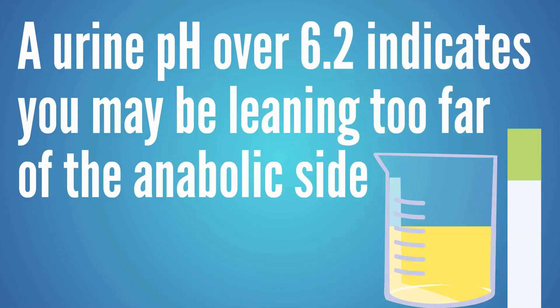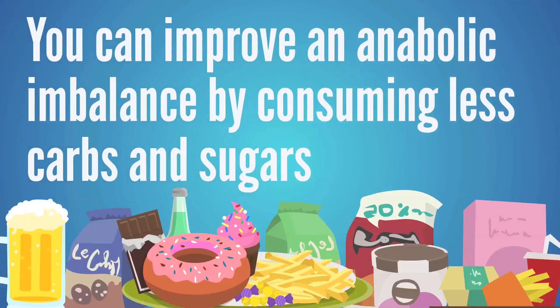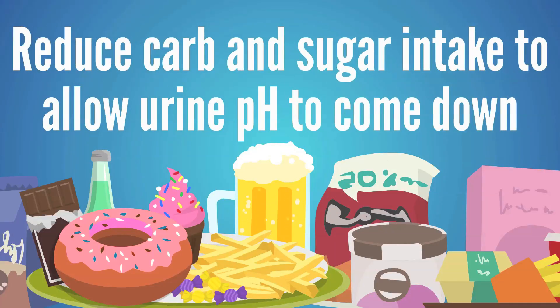One of the possible markers for an overly anabolic state is a high urine pH. So if you test your urine pH and it's over 6.2, that can be a possible indication that you may be leaning too far on that anabolic side. Consuming too many carbs and sugars tends to push that urine pH higher. This is also where we see a lot of hypoglycemic-type symptoms like dizzy spells, sugar crashes, or emotional issues during those sugar crashes. So if you are leaning too far on this anabolic side and consuming a lot of carbs and sugars, the first step would be to reduce your carb and sugar intake and allow your urine pH to come down a little bit.